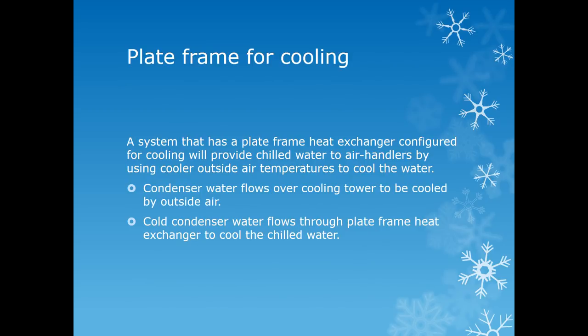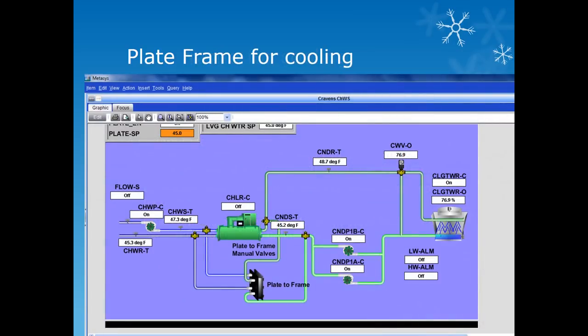This system has a plate frame heat exchanger configured for cooling. It will provide chilled water to air handlers by using cooler outside air temperature to cool the water. The condenser water flows over the cooling tower to be cooled by outside air. That water is then flowed through the heat exchanger to help cool the chilled water. This configuration is generally used during the colder months of the year and is a good source of providing cold water to the air handlers.